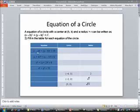Notice on the table we've got seven rows. On the first equation you have x minus 3 squared plus y minus 6 squared is equal to 16.